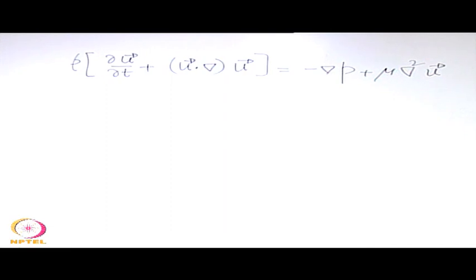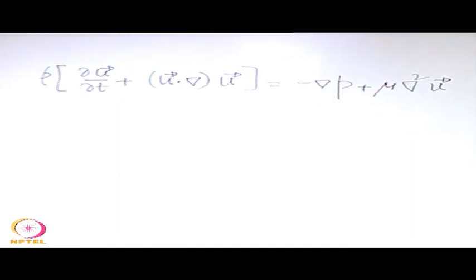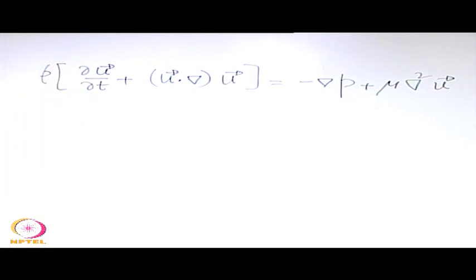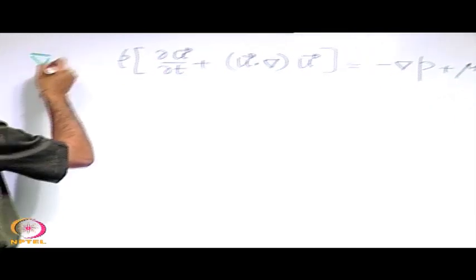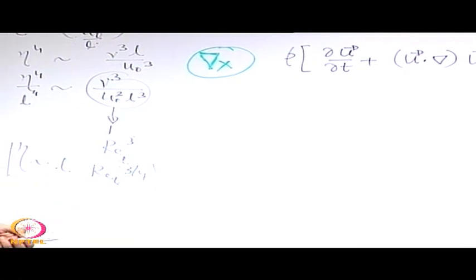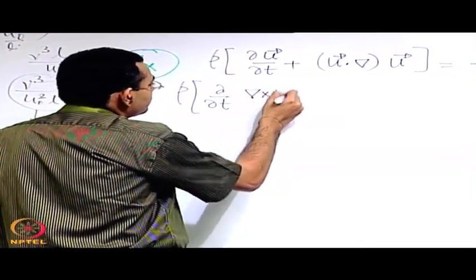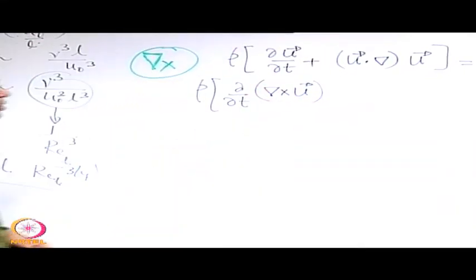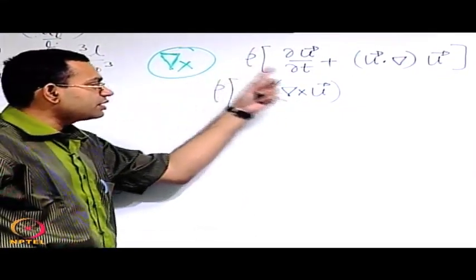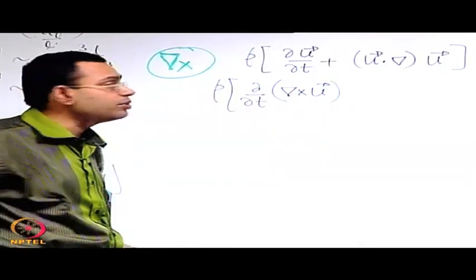This is the momentum equation in vector form. We are interested in getting expressions for vorticity out of that. We know that vorticity is the curl of the velocity vector. So let us take the curl of both sides of this equation, so that we have a chance of arriving at the vorticity. The curl is a vector operator with respect to spatial gradients, and with respect to time you may take it inside or outside without any problem.